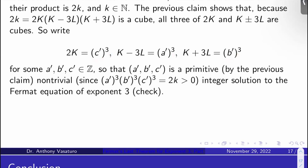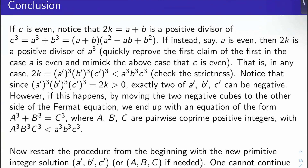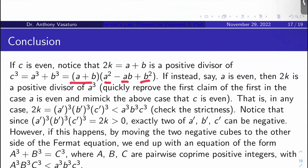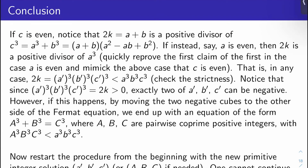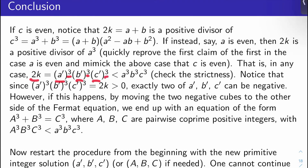If C is even, note that 2K equals A plus B is a positive divisor of C cubed, since A cubed plus B cubed equals (A plus B)(A squared minus AB plus B squared). Similarly, if A is even, 2K is a positive divisor of A cubed; if B is even, 2K divides B cubed. In any case, the product A prime cubed times B prime cubed times C prime cubed equals 2K is strictly less than A cubed times B cubed times C cubed.